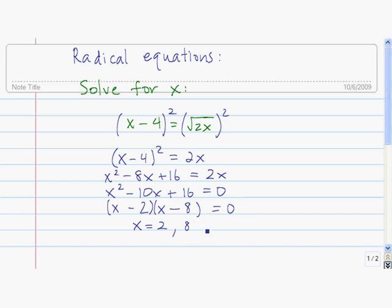But these aren't necessarily the solutions to the original equation, which is what we have before we squared. Squaring both sides here introduced the possibility of having an extraneous solution. So we need to check if these are solutions by checking to make sure they work in the original equation, which is x minus 4 equals the square root of 2x.